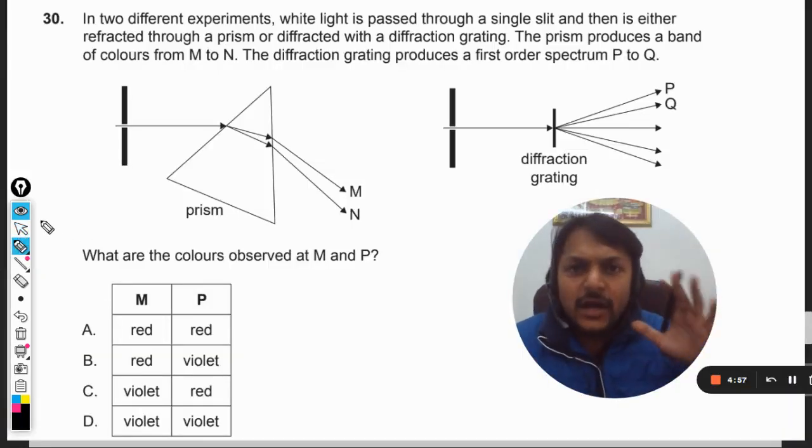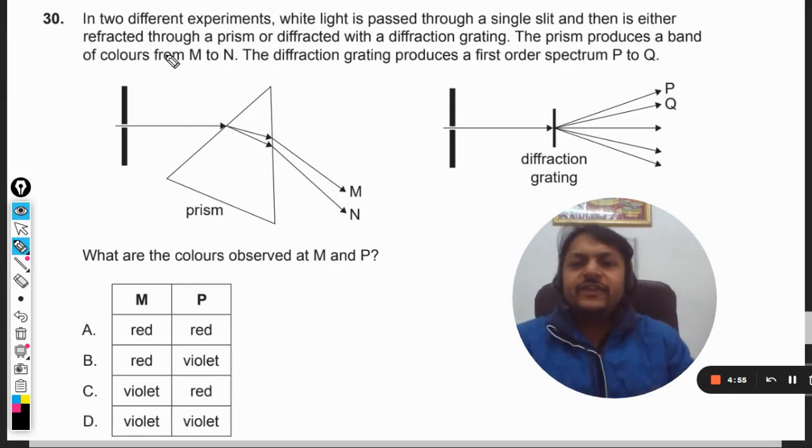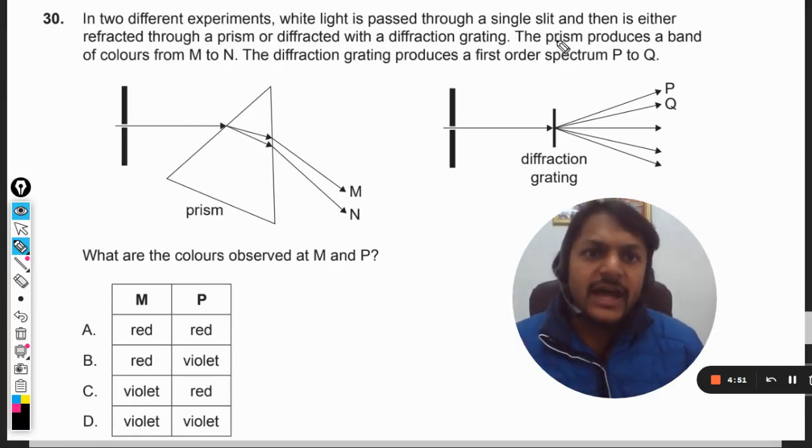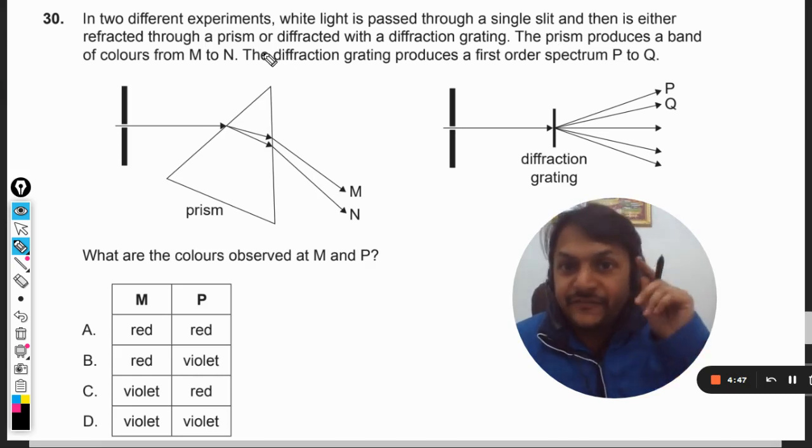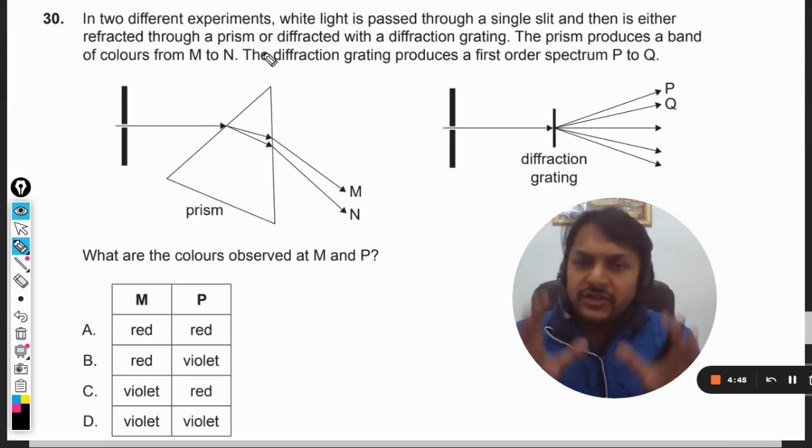Okay dear students, let us see how to do this question. In two different experiments, white light is passed through a single slit and then is either refracted through a prism or diffracted with a diffraction grating. The prism produces a band of colors from M to N. The diffraction grating produces the first order spectrum from P to Q.